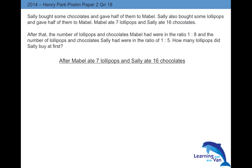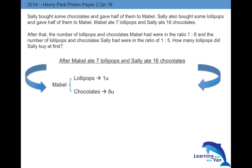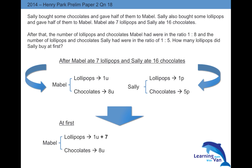So what happens in the end? After Mabel ate 7 lollipops and Sally ate 16 chocolates, we are told that the ratio is 1 to 8 for Mabel. If you use units for Mabel, you cannot use units for Sally — that is one very important fundamental concept. So Sally will be in terms of lollipops and chocolates: 1 part to 5 parts. But what is the situation at first? We have to work backwards, so whatever was eaten, we have to add back. Mabel becomes 1 unit plus 7 for lollipops, and for Sally we add back 16 chocolates to what she had at the end.